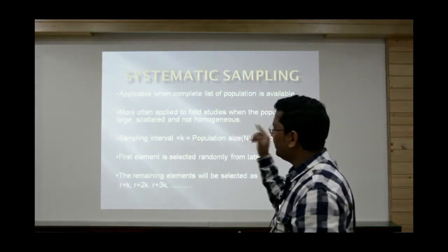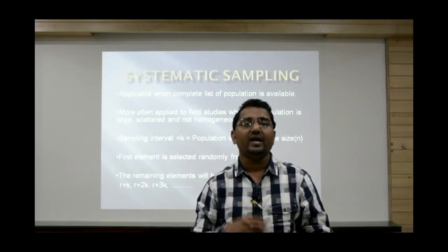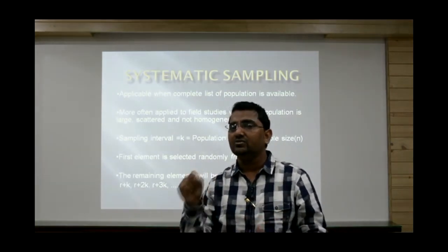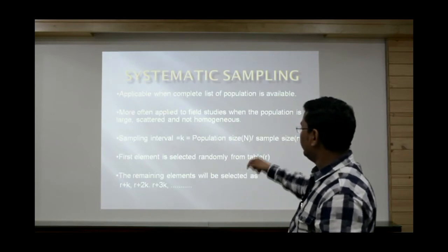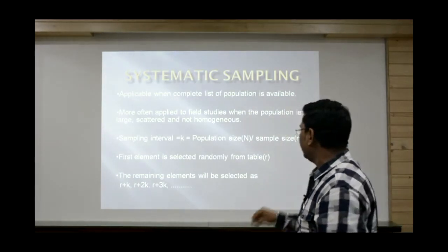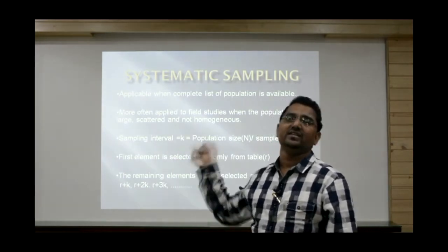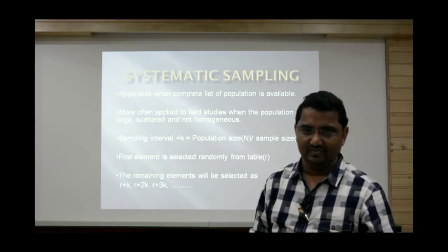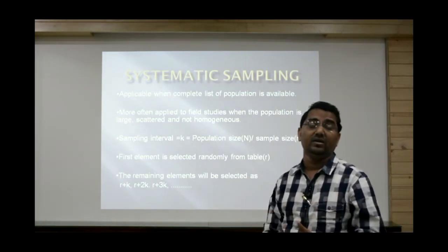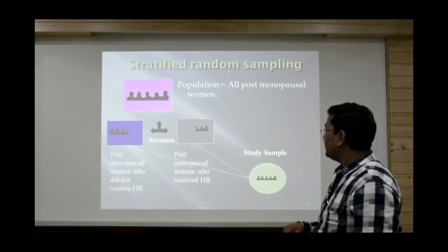Systematic sampling is applicable when the population is big and heterogeneous, but you must have the complete list of all elements in the population. In systematic sampling, only the first element is selected randomly, and the remaining elements are selected automatically at interval k, where k equals population size divided by sample size — that is the sampling interval. If the first element selected randomly is r, then the next is r+k, then r+2k, r+3k, and so on.